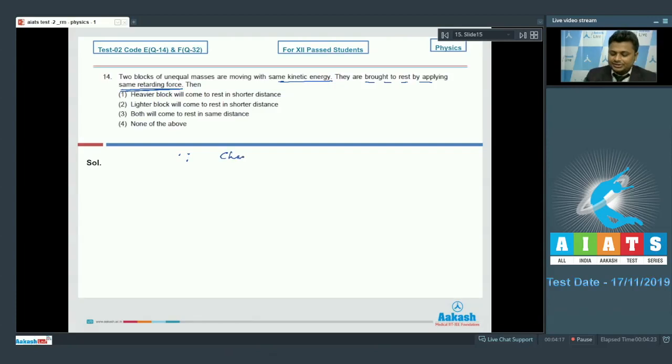Now first of all we know very well that the change in kinetic energy is equal to work done. Since both have same initial kinetic energy, ultimately they are being stopped, so they will have same final kinetic energy. It means change in kinetic energy of both blocks is same. Delta KE for both blocks is same. And in this manner, work done for both will also be same.